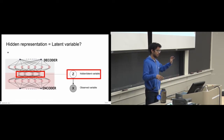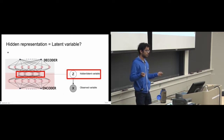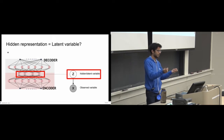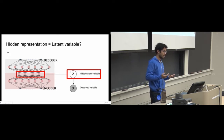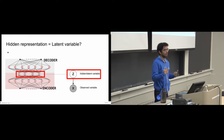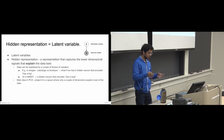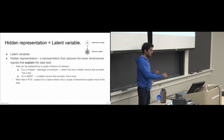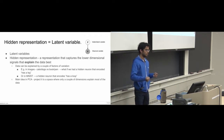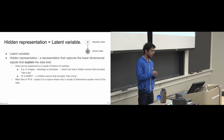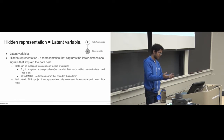On the left is the autoencoder picture: an encoder compresses input into a hidden layer, then the decoder reconstructs it. The hidden representation in autoencoders is essentially the same as a latent variable in VAEs. Mathematically, latent variables are hidden unobserved quantities that explain the variation in your data. Hidden representations try to capture a lower-dimensional manifold — projecting data to lower dimensions so that similar examples lie close to each other.